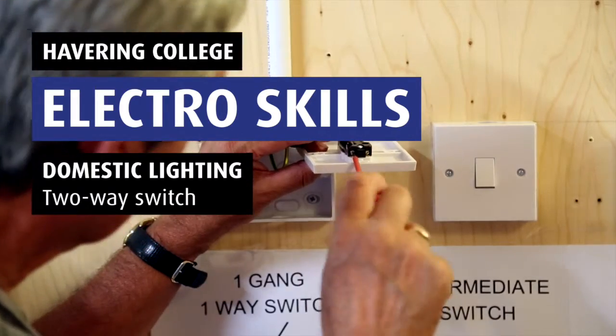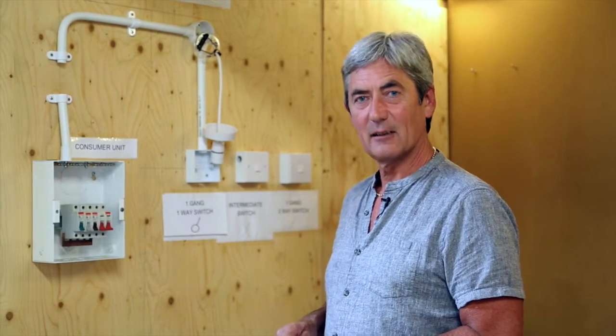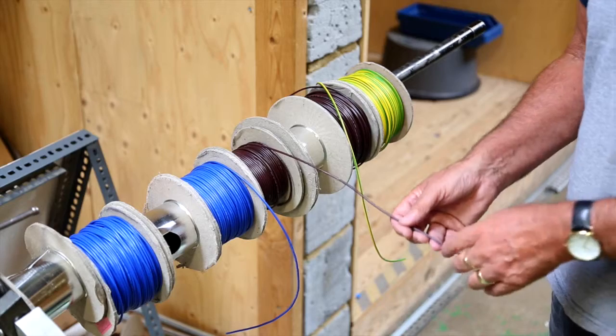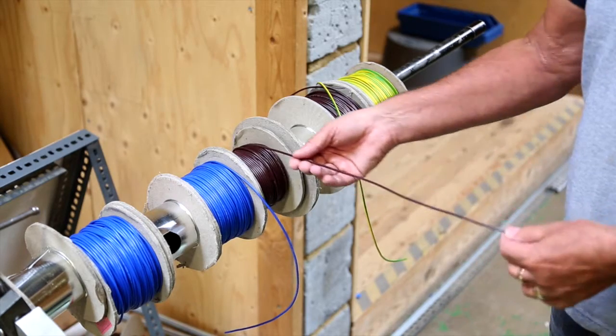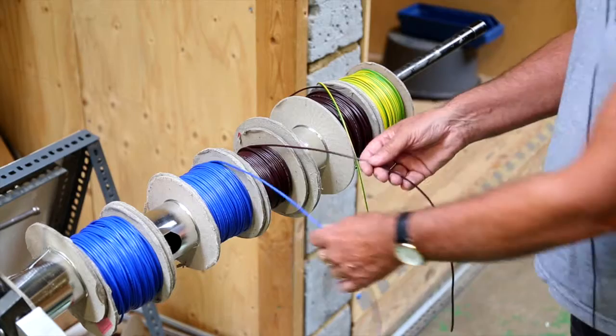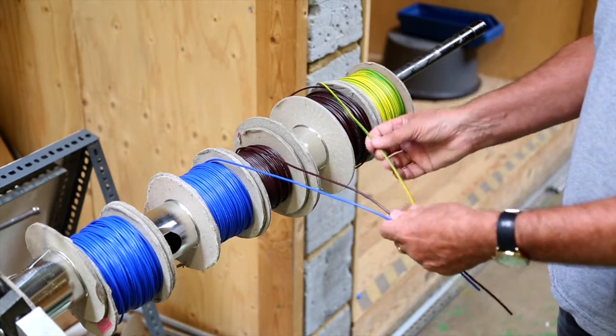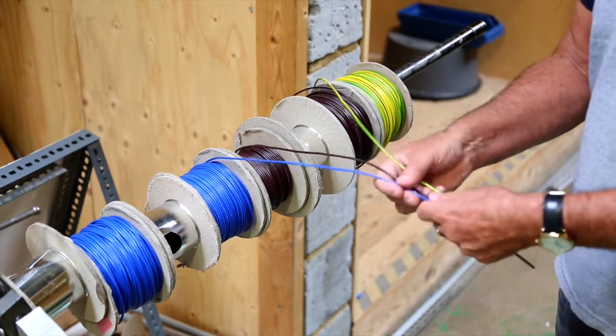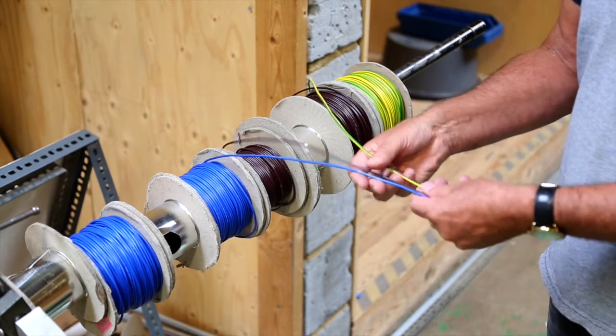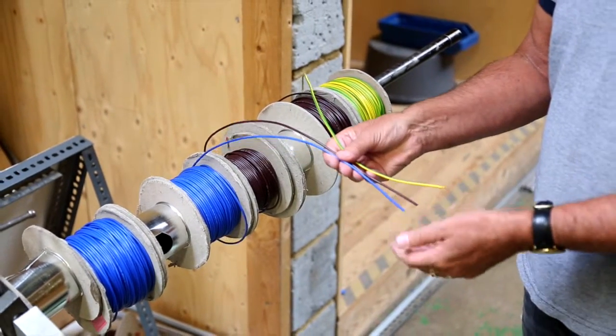Hello and welcome back to the How To Electrical Series. Today we're going to look at a one-way two-plate lighting circuit. The cables you'll see me using will be the brown line cable, the blue neutral cable, and the green and yellow CPC, Circuit Protective Conductor. The size of these cables for domestic lighting circuits are 1.5 millimeter squared.